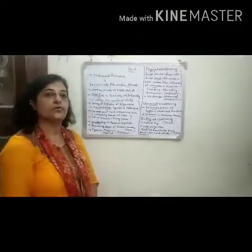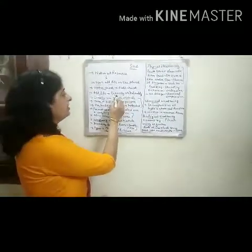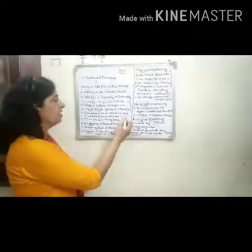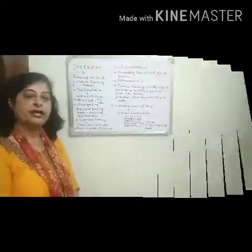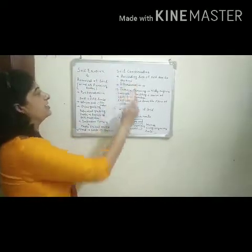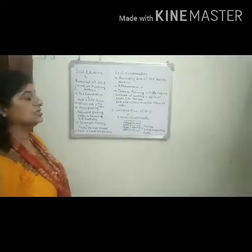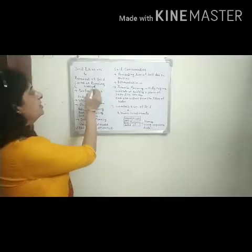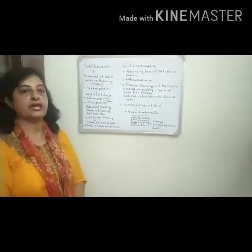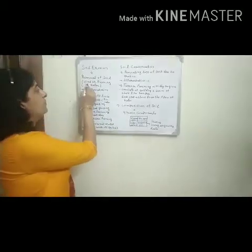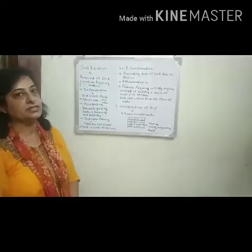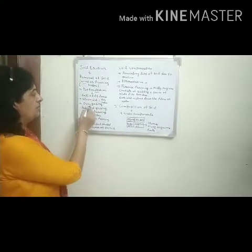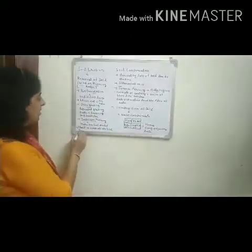Soil is a must for every living organism, directly or indirectly, and is a habitat for many organisms. Soil erosion means the removal of the uppermost or top layer of soil by wind or by running water. The topmost layer of soil is fertile. The main causes of soil erosion are deforestation, overgrazing, improper farming, and flood.